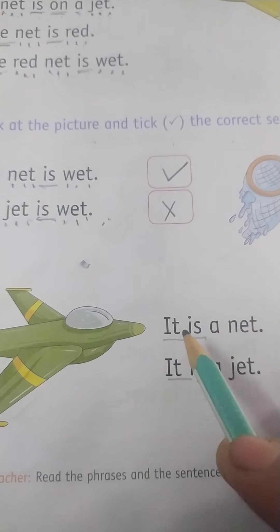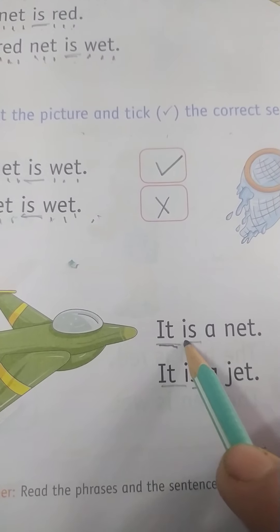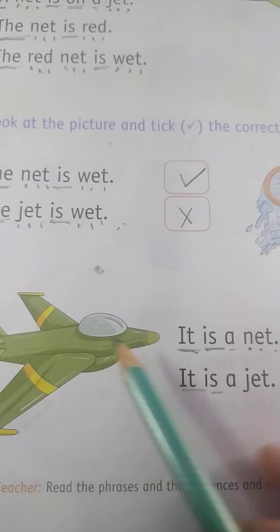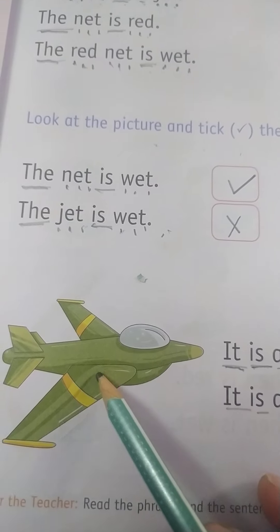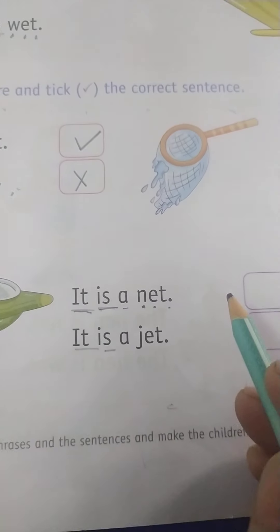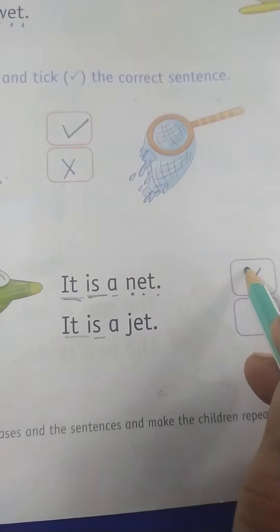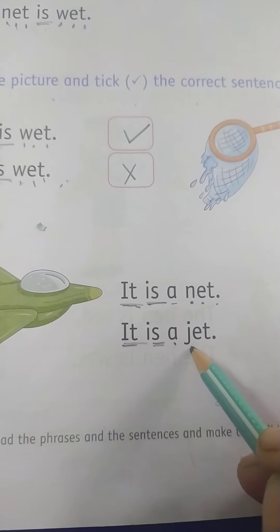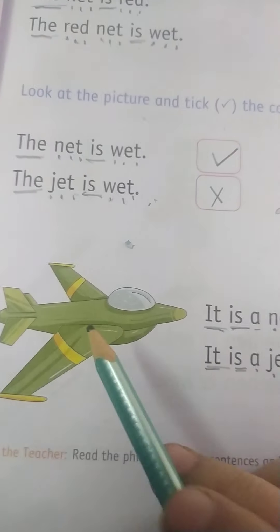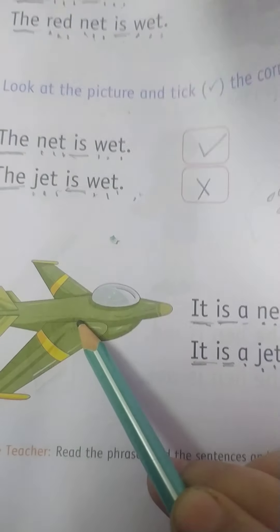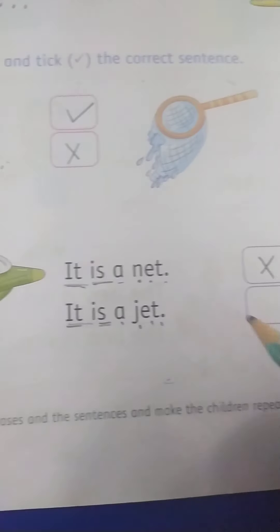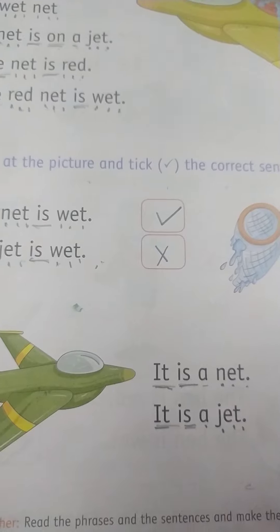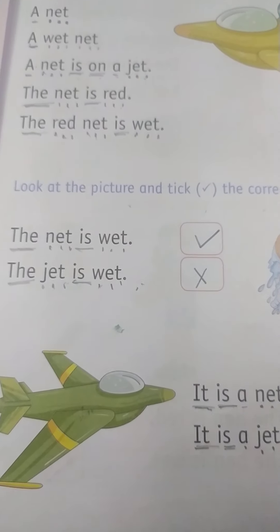Now read the next sentence: it is a net. Is this a net? Kia ye net hai? No. So this sentence is incorrect. It is a jet — ye ek jet hai. This is the correct sentence: it is a jet. So children, in the same way, you all have to do this comprehension. Thank you.